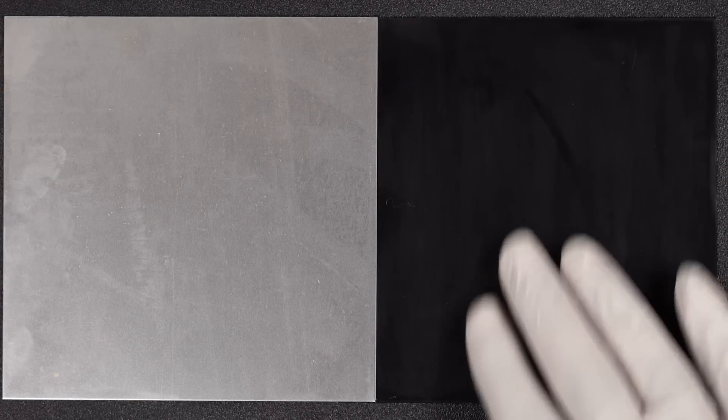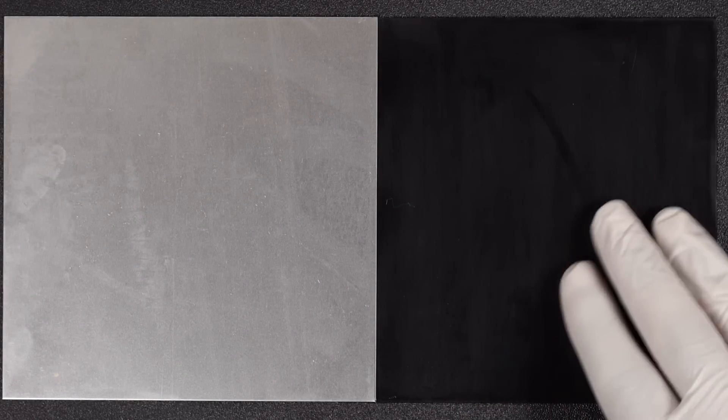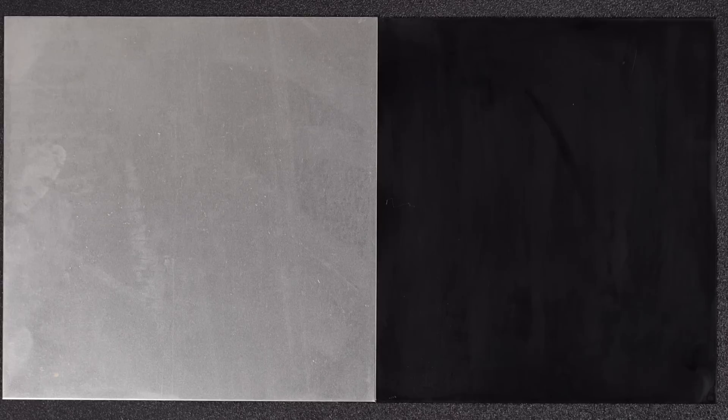So at this point, the part is finished. An HVLP spray gun was used to apply the clear coat, but conventional spray guns can also be used. The part is UV protected and all set for exterior applications. For more information, check out surfinchemical.com.